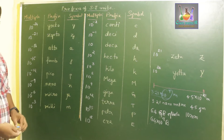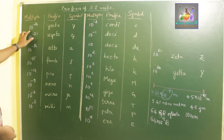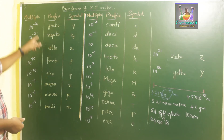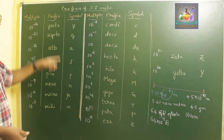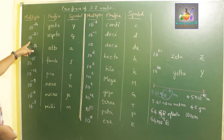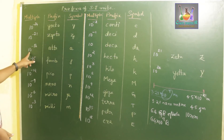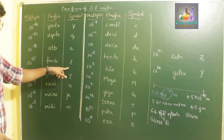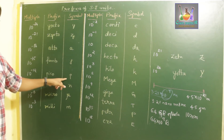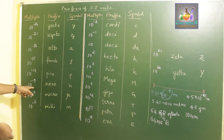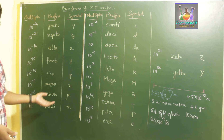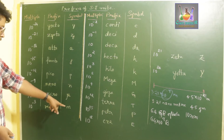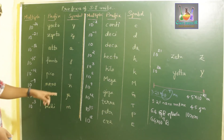Let's go through all the prefixes with their multiples and symbols. 10⁻²⁴ is yocto, symbol y. 10⁻²¹ is zepto, symbol z. 10⁻¹⁸ is atto, symbol lowercase a. 10⁻¹⁵ is femto, symbol f. 10⁻¹² is pico, symbol p — we usually use this for solid states. 10⁻⁹ is nano, symbol n — used for wavelengths. 10⁻⁶ is micro, symbol mu (μ). 10⁻³ is milli, symbol m. Don't confuse this m with the normal meter symbol.